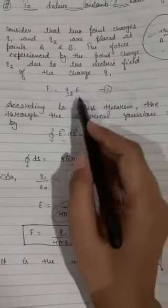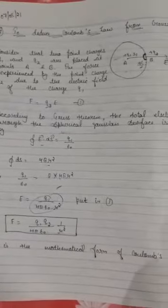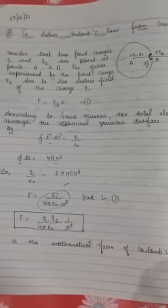So I have this equation, that is my Coulomb's law. So it is the mathematical form of Coulomb's law which I have proved by taking the help of Gauss theorem.